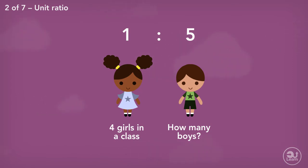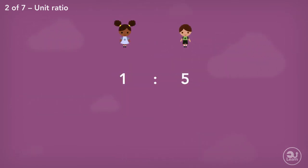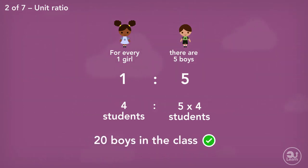We can find the number of boys in the class by using what we know about equivalent ratios. Let's first lay out our information like we've been doing. Due to the order the question was presented, the ratio tells us that for every one girl there are five boys in the class. This means there are five times the number of boys than girls. There are four girls, which therefore means there are five lots of four boys. Five times by four equals twenty. There are twenty boys in the class.